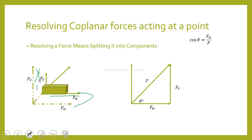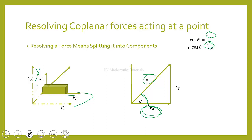We have an angle that the force makes with the horizontal, and we can resolve this force into the horizontal and vertical components using trigonometry. We know that cosine of this angle equals adjacent over hypotenuse. By change of subject, the x-component — or horizontal component — equals the magnitude of the force times the cosine of the angle it makes with the horizontal axis.